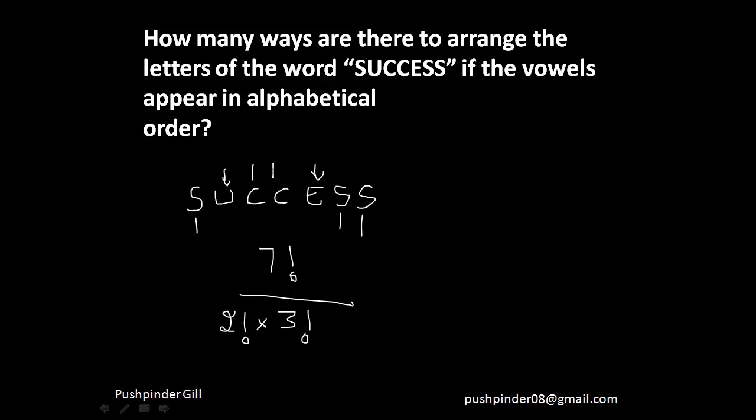For the 3 s's being identical, we divide by 3 factorial. Similarly, there are 2 c's which are also identical, so we divide by another 2 factorial. The answer is 7 factorial divided by 2 factorial times 3 factorial times 2 factorial. By 'identical' here I don't mean the same letter — I mean they cannot replace each other. If I put e in the place of u, the alphabetical order condition would be violated. Understanding this approach lets you solve even more complex problems easily.